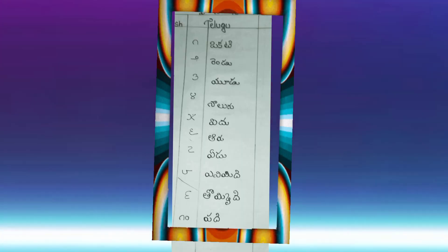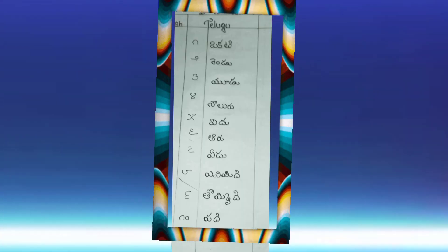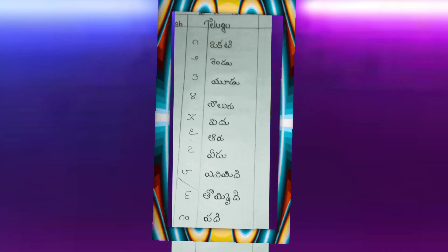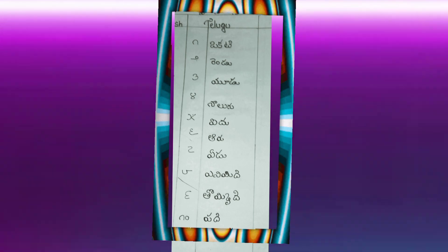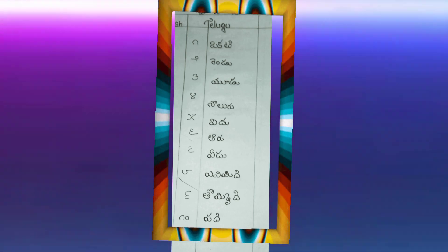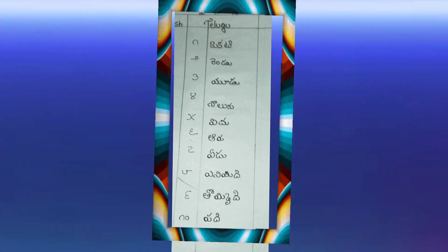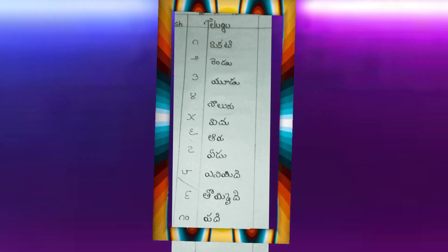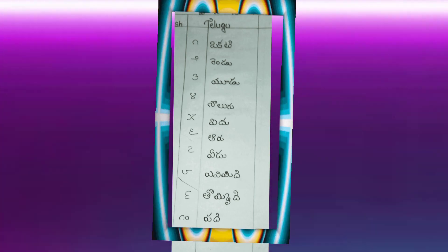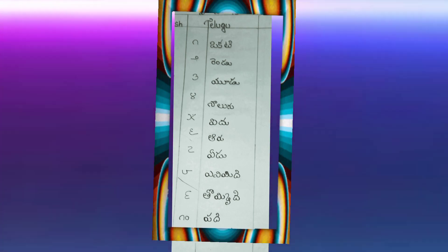Now I am reading Telugu number names. 1. 2. 3. 4. 5. 6. 7. 8. 9. 10.